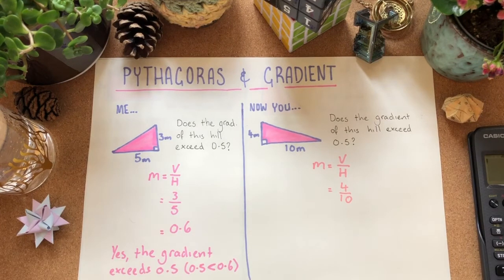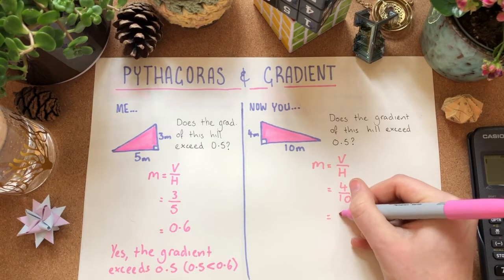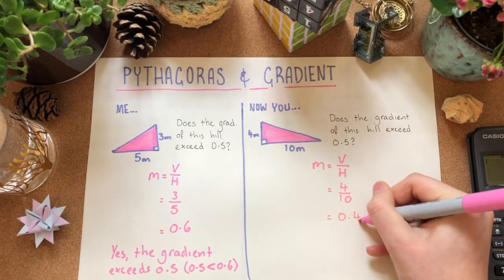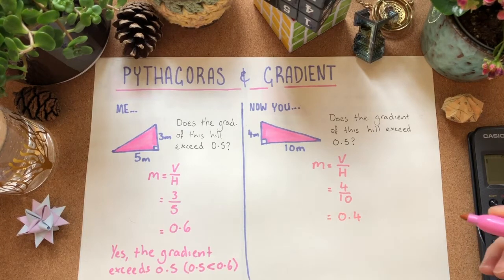Again, you can use a calculator, you can use your knowledge of fractions or just dividing by 10. And this is going to be 0.4. Have we answered the question? No. So, let's go back and do it.